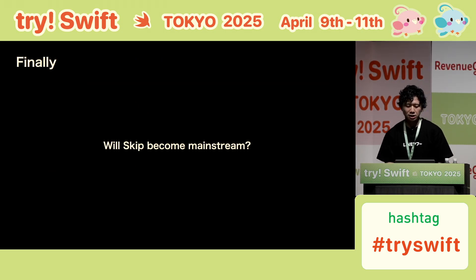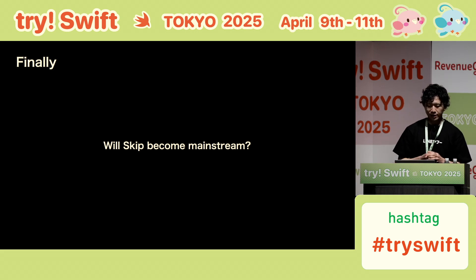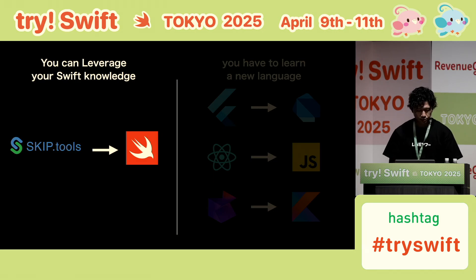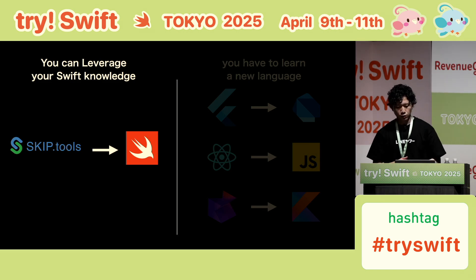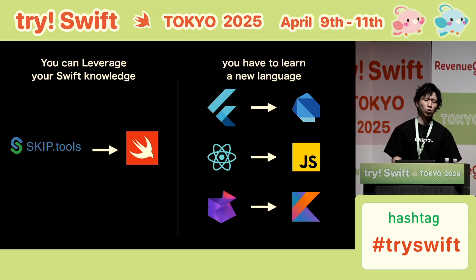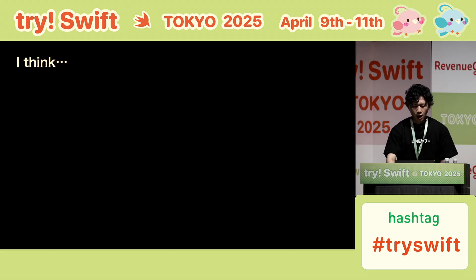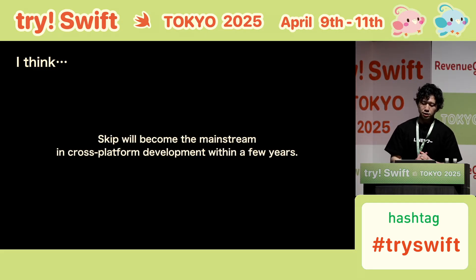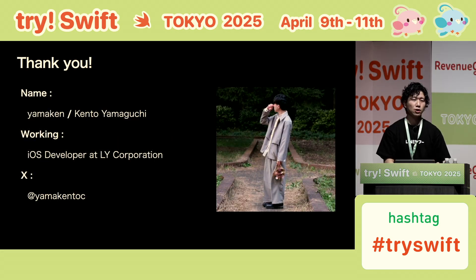Finally, I'll wrap up by sharing my opinion on whether Skip will become the mainstream in cross-platform development. In conclusion, I think Skip is an amazing tool, because it lets you leverage your Swift knowledge to build Android apps. With other cross-platform tools, you have to learn a new language from scratch. I believe that Skip isn't complete yet, and it will continue to evolve. I think there is a strong possibility that Skip will become the mainstream in cross-platform development within a few years. That's all. Thank you for listening.